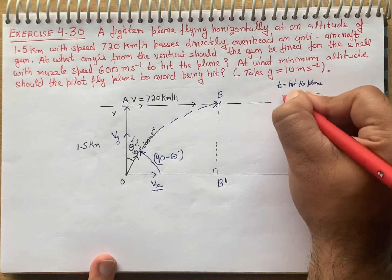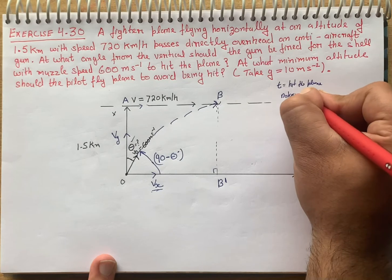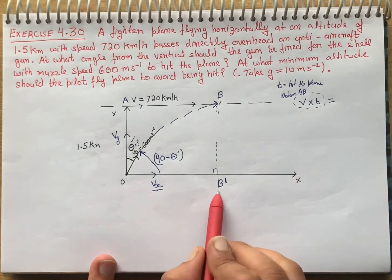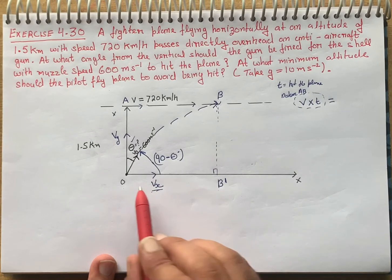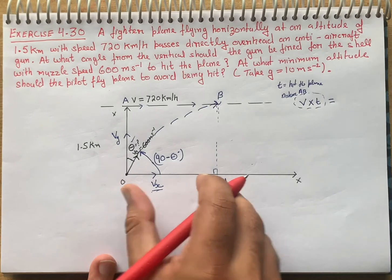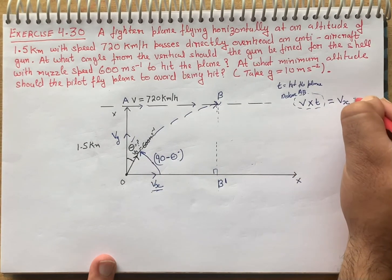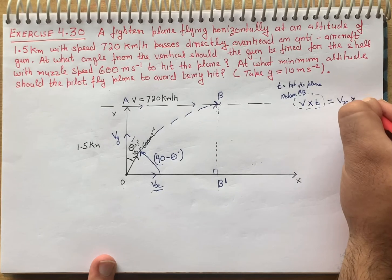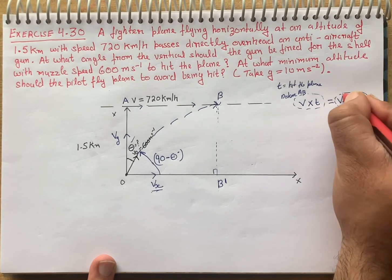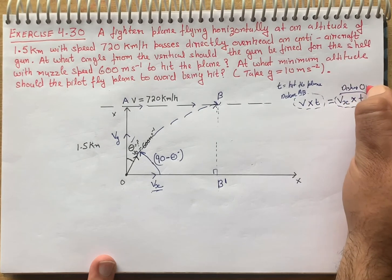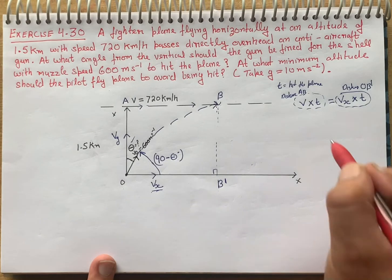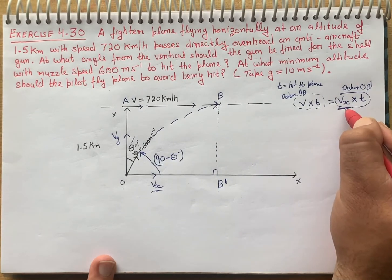The x-axis and y-axis always have a total angle of 90 degrees. If we take theta as the angle with the vertical, then the remaining angle becomes 90 minus theta. So this becomes our angle with the x-axis. We need to find vx — the velocity of the plane v into time gives us the distance A-B, which equals distance O-B'.